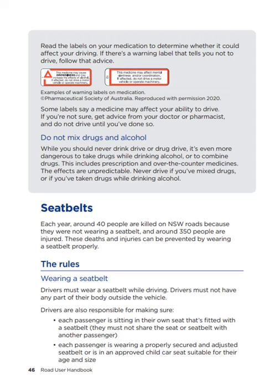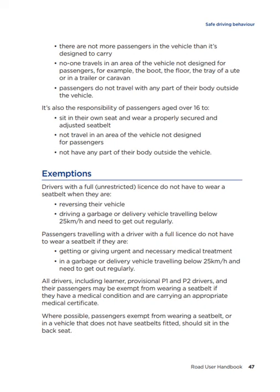Seatbelts. Each year, around 40 people are killed on NSW roads because they were not wearing a seatbelt, and around 350 are injured. These deaths and injuries can be prevented by wearing a seatbelt properly. The rules — wearing a seatbelt: drivers must wear a seatbelt while driving. Drivers must not have any part of their body outside of the vehicle. Drivers are also responsible for making sure that each passenger is sitting in their own seat fitted with a seatbelt — they must not share a seatbelt with another passenger — and each passenger is wearing a properly secured and adjusted seatbelt or is in an approved child car seat. There must not be more passengers in the vehicle than it's designed to carry, and no one travels in an area not designed for passengers — for example, the boot, the floor, the tray of a ute, or in a trailer or caravan. Passengers must not have any part of their body outside of the vehicle.